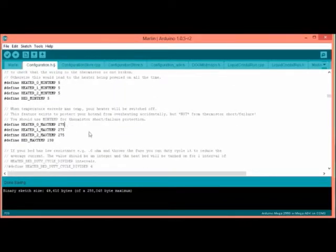Now go down to line number 113. Change this 275 to 300. Now save and upload this onto your Arduino board.